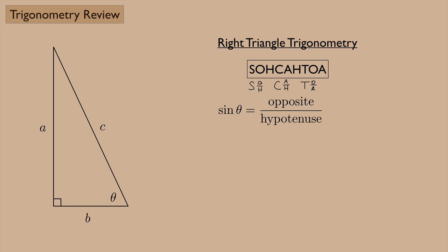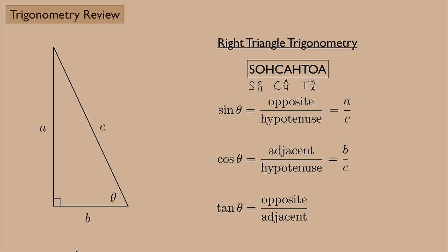So this is the opposite over the hypotenuse. Here's our angle. The opposite side, the side across from the angle, would be A, and the hypotenuse is C. So this would be A over C. Cosine of theta, that's A over H, that's adjacent over hypotenuse. And so if we look at our angle right here, the adjacent side, the side right next to it, would be B. And then the hypotenuse is still C, so this would be B over C. And the tangent of theta, that's O over A, that'd be opposite over adjacent. Opposite is A, adjacent is B. This should be A over B.